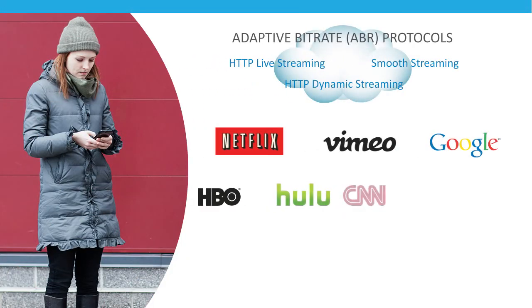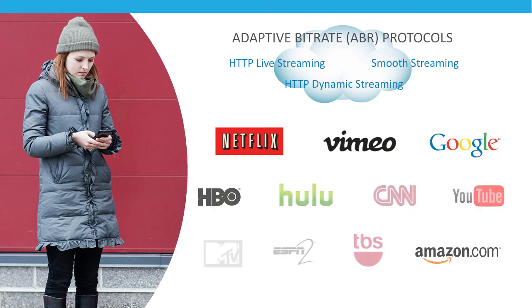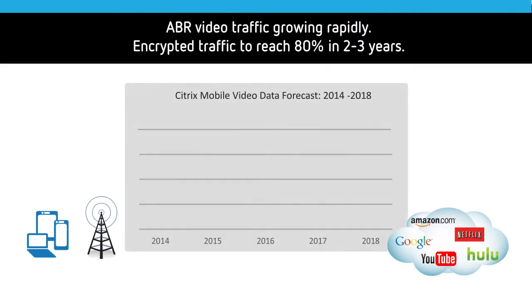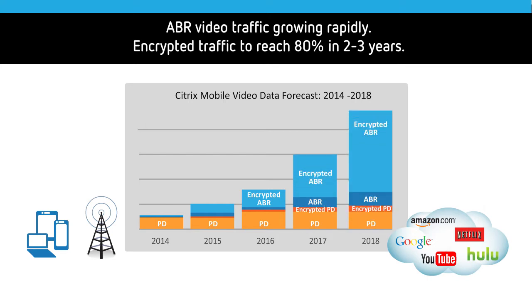Adaptive bitrate, or ABR streaming, is a technique used to deliver video content over the Internet. ABR video traffic has been growing rapidly, and as of 2016, it accounted for more video traffic over mobile networks than legacy progressive download techniques.